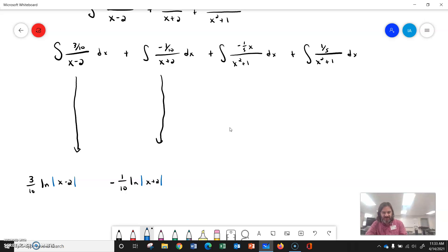Alright, then the next one is going to be the negative 1 fifths over x squared plus 1. That's going to be a u sub. So with a u sub, we'll let our u be x squared plus 1, our du be 2x dx. So 1 half du equals x dx.